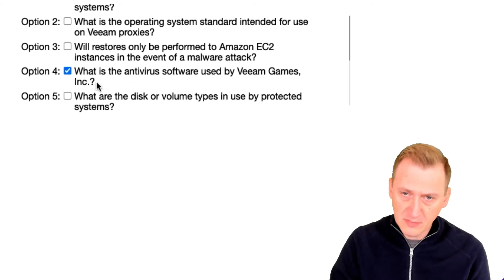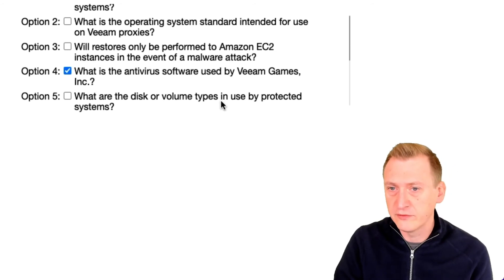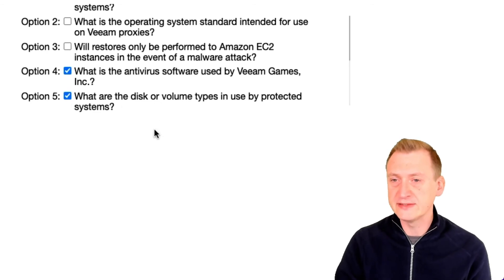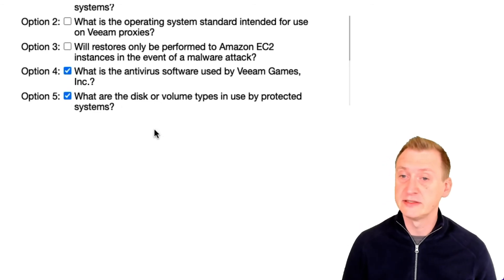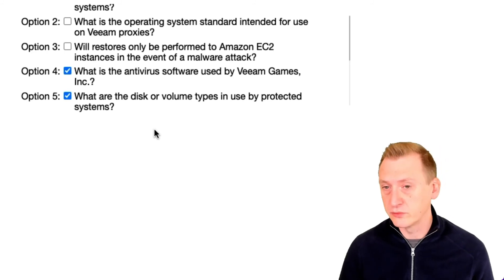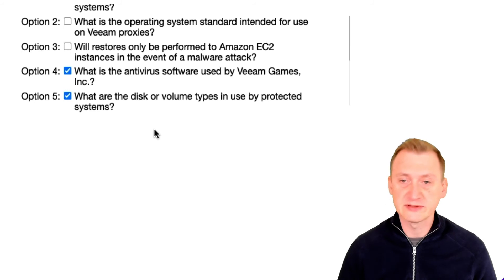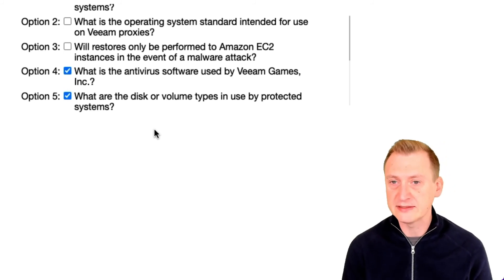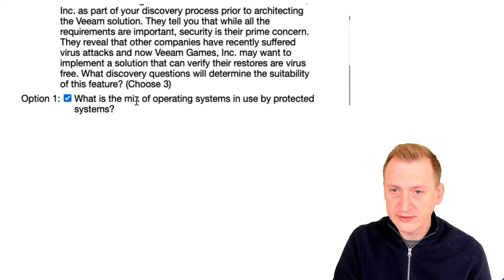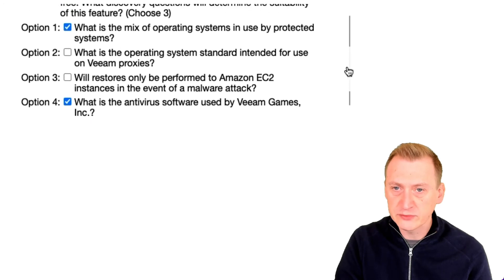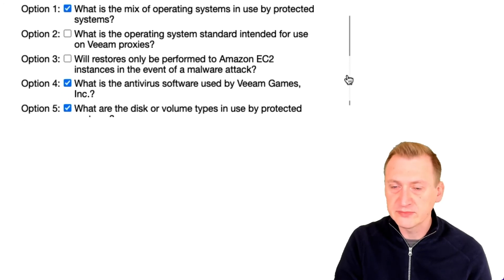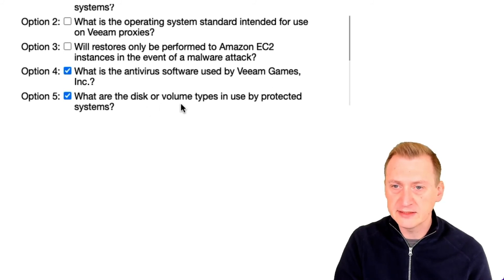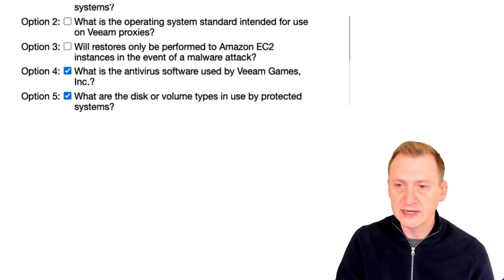What are the disk or volume types in use by protected systems? That's super relevant — if these are file systems we can't mount or read, it would be a potential problem. It also tells us something about the mount servers, which need to be able to mount these files. So the answers are one, four, and five: we want to know the operating systems in use, the antivirus software being used, and the disk or volume types.